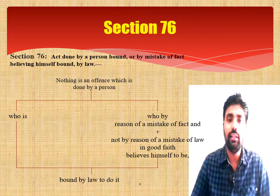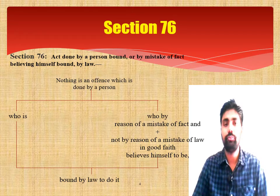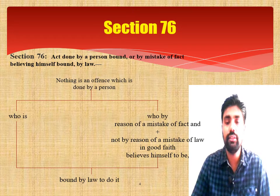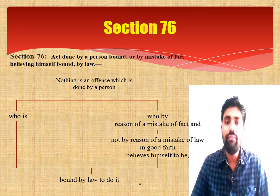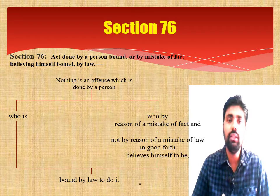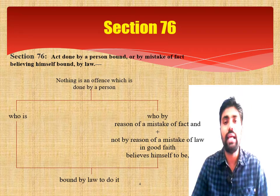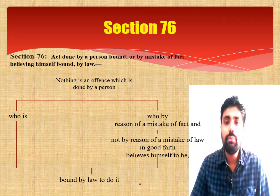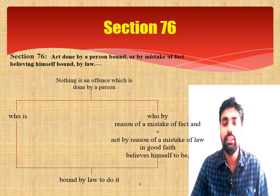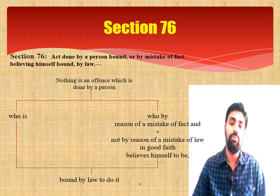Now, Section 76 of the IPC — its marginal note reads: 'Act done by person bound by, or by mistake of fact believing himself bound by, law.' This section applies to every person. Section 76 deals with two things: first, if the person is bound by law to do it, then he shall be exempted from criminal liability; second, if by mistake of fact he believed himself to be bound by law, he shall again be exempted from criminal liability.